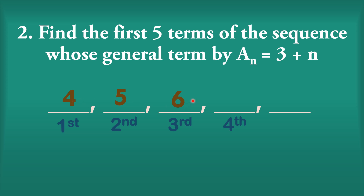So the sequence so far is 4, 5, 6. After 6, without solving, the next term is 7, and then 8. If we verify: 3 plus 4 is 7 and 3 plus 5 is 8.